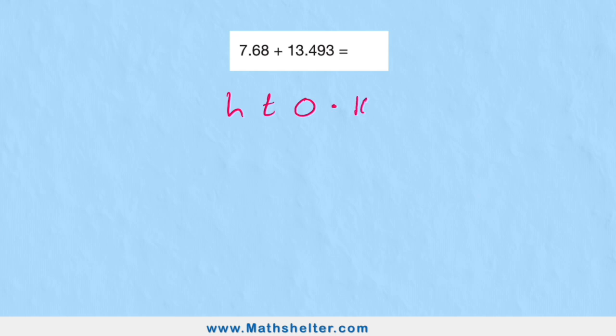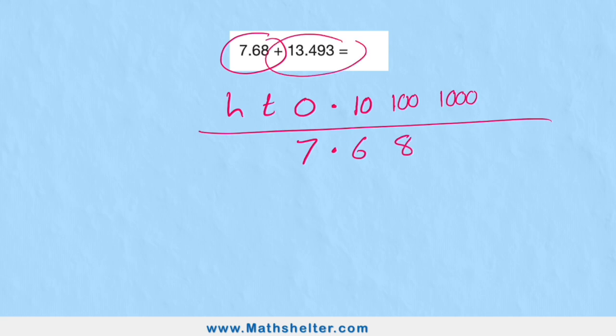Now I'm ready to begin. My number 7.68 has seven ones point six eight, making sure I'm putting everything in the right columns. And 13.493 has one ten, three zeros, decimal back in the right place, four tenths, nine hundredths, and three thousandths.